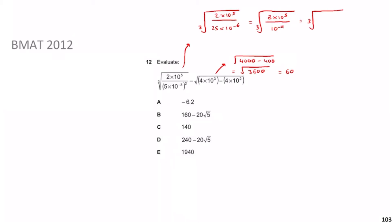So we have the cube root of (8 × 10⁵) / 10⁻⁴ = cube root of 8 × 10⁹. The cube root of 8 is 2, and the cube root of 10⁹ is 10³. So this term equals 2000. Then 2000 − 60 = 1940, which is the answer.